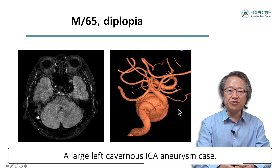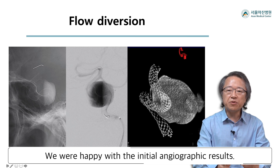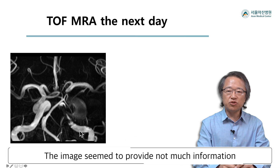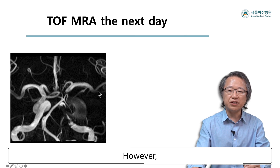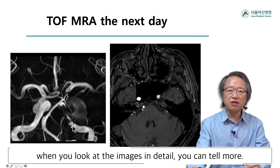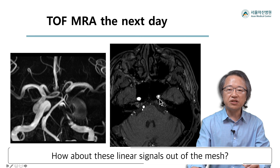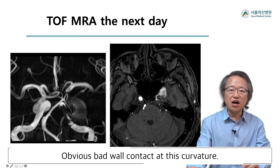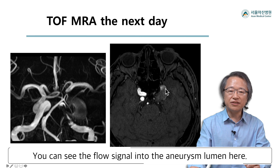A large left cavernous ICA aneurysm case. We achieved good stagnation after flow diversion and were happy with the initial angiographic results. We obtained TOF MRA the next day. The image seemed to provide not much information except for good parent artery flow-related signals. However, when you look at the images in detail, you can tell more. The stent mesh is seen as a ring-shaped signal void structure. There are signals from flow outside the mesh, meaning poor wall apposition — with obvious bad wall contact at this curvature. You can see flow signal in the aneurysm lumen here.